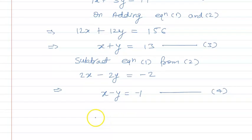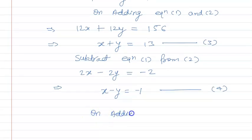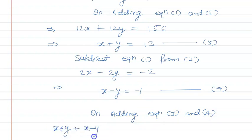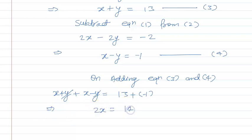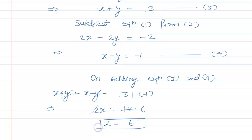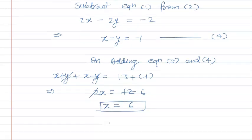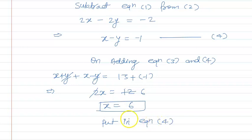Now let's add equation 3 and equation 4. On adding, we get x plus y plus x minus y equal to 13 plus minus 1. The y and minus y cancel out, so 2x is equal to 12, and x's value comes out to 6. Now let's put this value into equation 4.